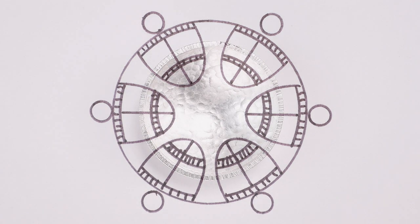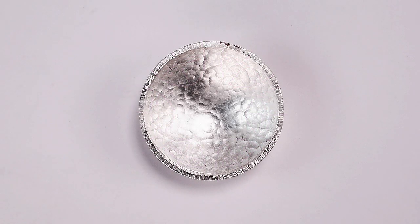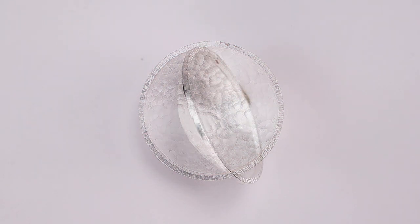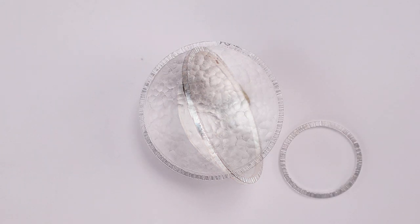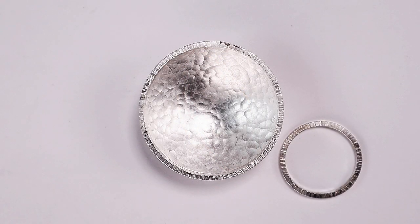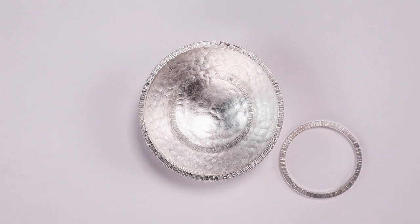So we'll start with a domed textured sheet with a textured wire soldered around the outside edge. This will give it more 3D quality. Then we'll add another textured silver wire on the inside of that dome.